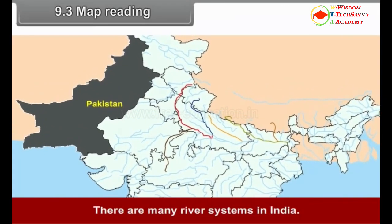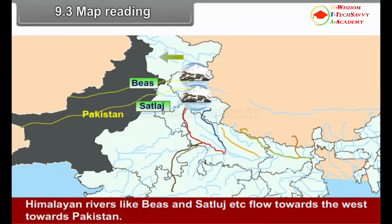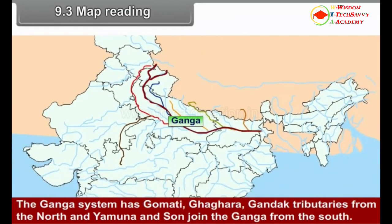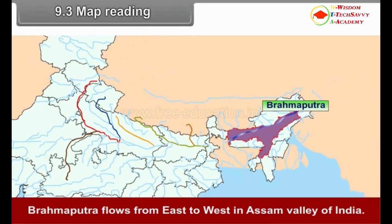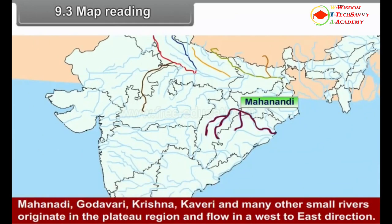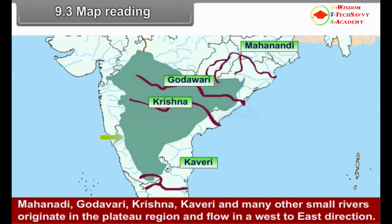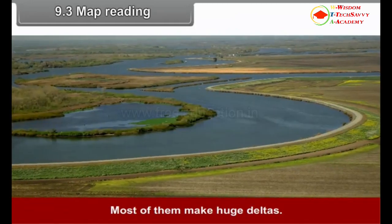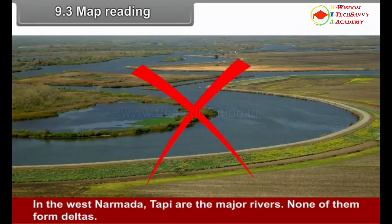There are many river systems in India. Himalayan rivers like Beas and Sutlej flow towards the west towards Pakistan. The Ganga system has Kosi, Ghaghra, and Gandak tributaries from the north, and Yamuna joins the Ganga from the south. Brahmaputra flows from east to west in the Assam Valley. Mahanadi, Godavari, Krishna, Kaveri and many other small rivers originate in the plateau region and flow west to east, and most of them make huge deltas. In the west, Narmada and Tapi are the major rivers, and none of them form deltas.